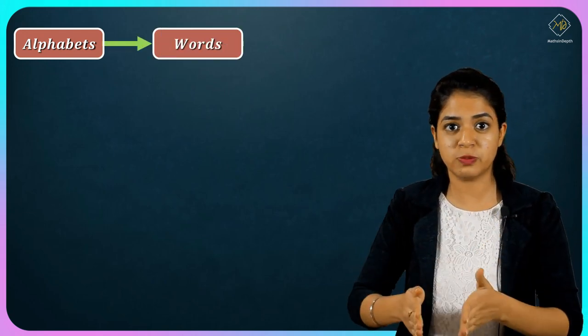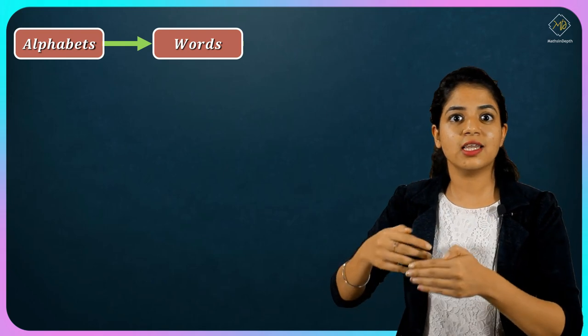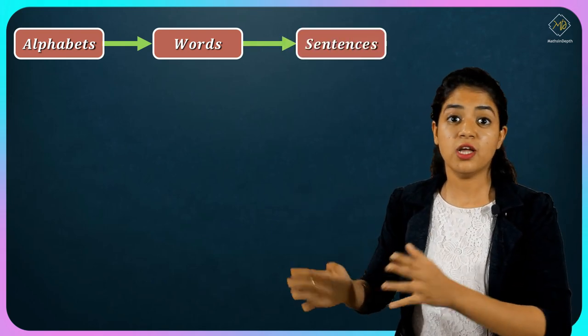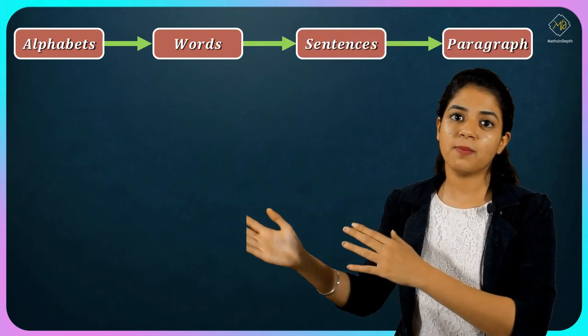Now you can say how we learn C. We don't write programs directly. Like we studied English from childhood, we studied alphabets, then we used to create words, then sentences. Then we used to combine sentences, then create paragraphs.